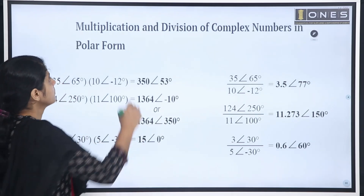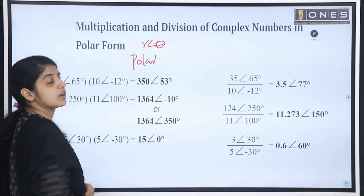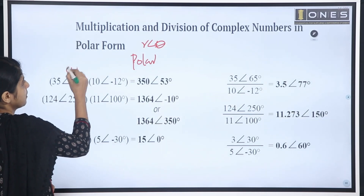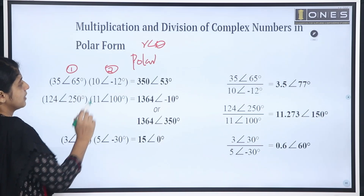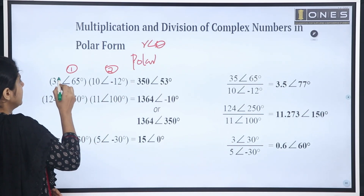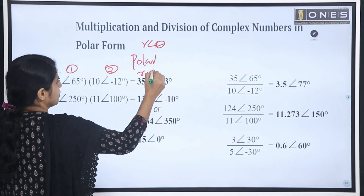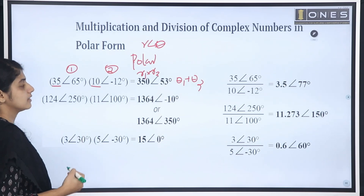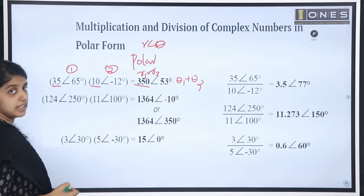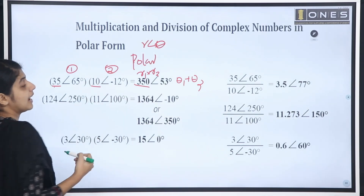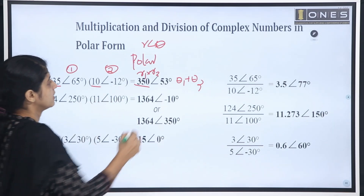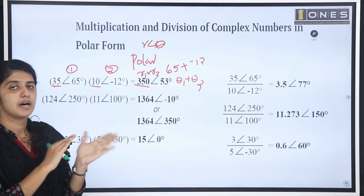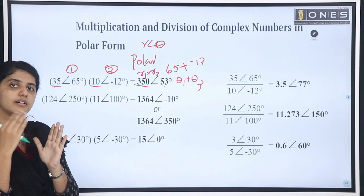For multiplication and division, we use the polar formula. For multiplication: r1 into r2, with angle theta1 plus theta2. Example: 35 angle 65 multiplied by 10 angle minus 12. The magnitude is 35 times 10 equals 350. The angle is 65 plus (minus 12) equals 53. So the result is 350 angle 53.